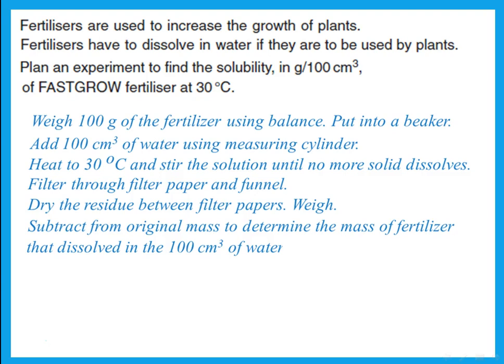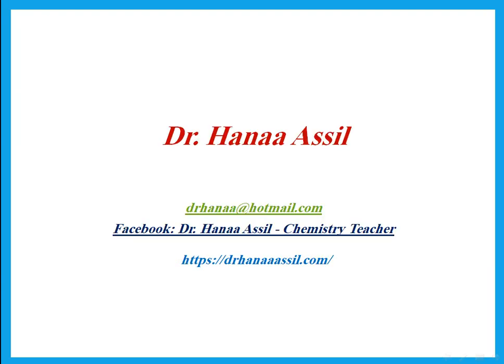Put the fertilizer into a beaker and add 100 cm³ of water measured with a measuring cylinder. Heat it to 30°C, then stir the solution until no more solid dissolves. Filter through filter paper and funnel, then dry the residue between filter papers. You now have the mass of residue — the amount that did not dissolve. Subtract this from the original mass added to determine the mass of fertilizer that dissolved in 100 cm³ of water.